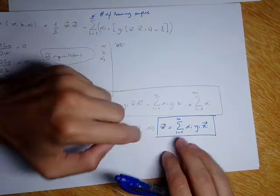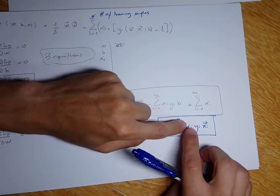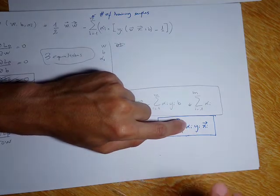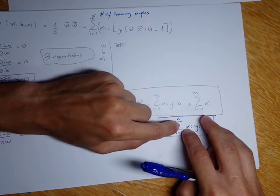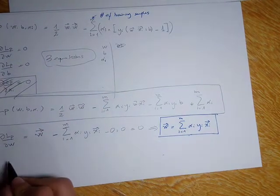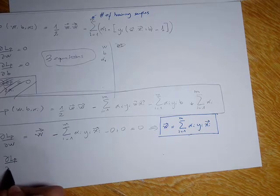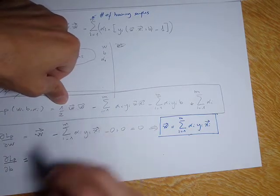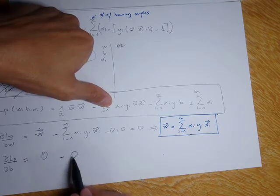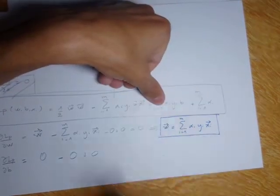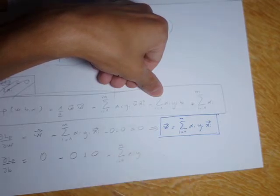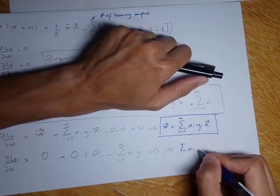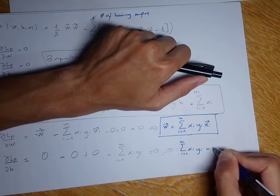As you can see, to get W I need the alpha_i, which I still don't have — those will come from the dual expression. But first, let me take the derivative with respect to B. The partial derivative of the primal with respect to B: the first term is zero, the second term has nothing for B, so it's zero. The remaining term gives the summation of alpha_i y_i from i=1 to m. Setting this equal to zero, I conclude that the summation of alpha_i y_i from i=1 to m equals zero.